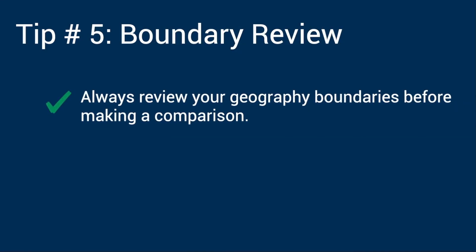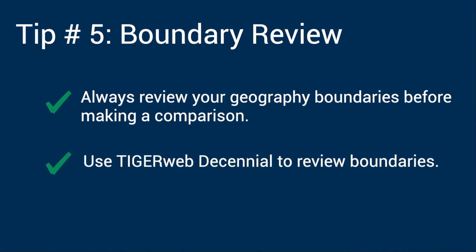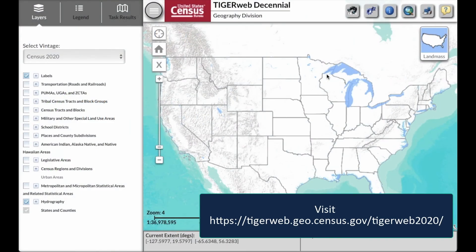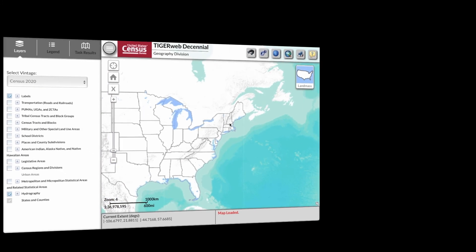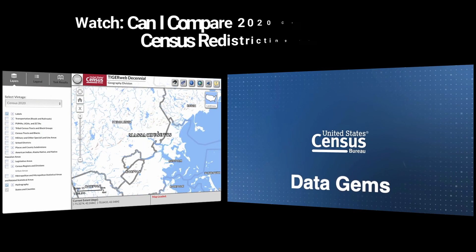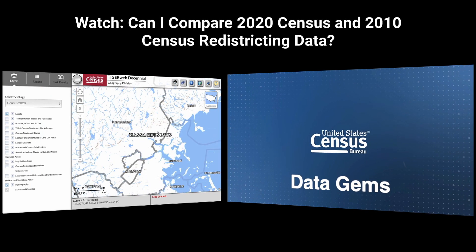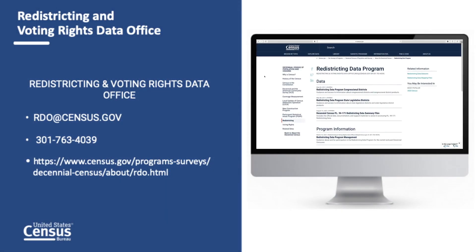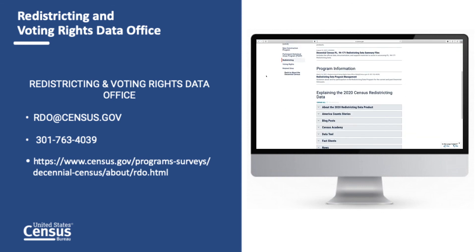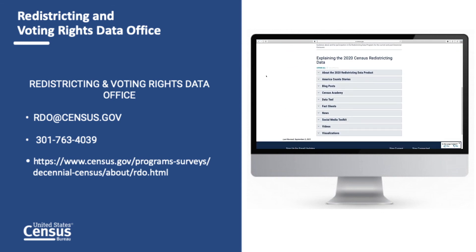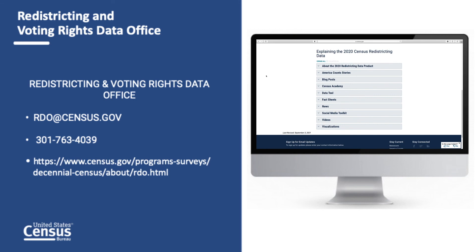Tip number five: since it is necessary to review geography boundaries before making a comparison, let me take you to Tiger Web Decennial so you can learn how to quickly determine if the boundaries for your area of analysis have changed. To learn how to use Tiger Web Decennial, watch Census Academy's Data Gem, 'Can I Compare 2020 Census and 2010 Census Redistricting Data.' One of the best places to find resources and information on all five phases of the Redistricting Data Program is their website, where you can access the redistricting data files, technical documentation, and more. Alexandra will introduce you to several helpful resources on this webpage in part two.